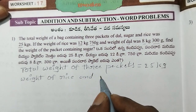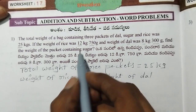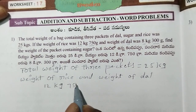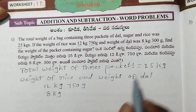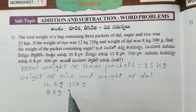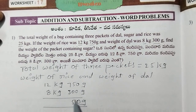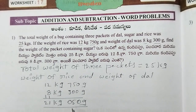We will add the weights of rice and dal first: 12 kg 750 grams and 8 kg 300 grams. Adding the grams: 0 plus 0 is 0, 5 plus 0 is 5, 7 plus 3 is 10. Carry 1. Then 8 plus 1 plus 1 is 10, carry 1. 1 plus 1 plus 2 gives us 21 kg 50 grams.